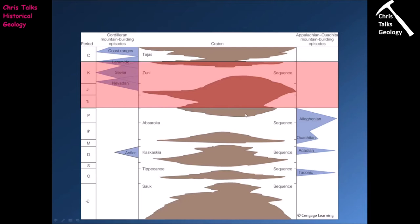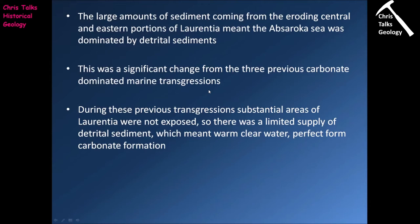We can see the Absaroka retreating as we move between the Permian and the Triassic — there's actually another pulse where the Absaroka starts moving back inland before finally fully retreating. North America is nearly fully exposed during the Jurassic. At that point we're going to have another marine transgressive event which will cover North America, and this is going to give us the Zuni sequence.